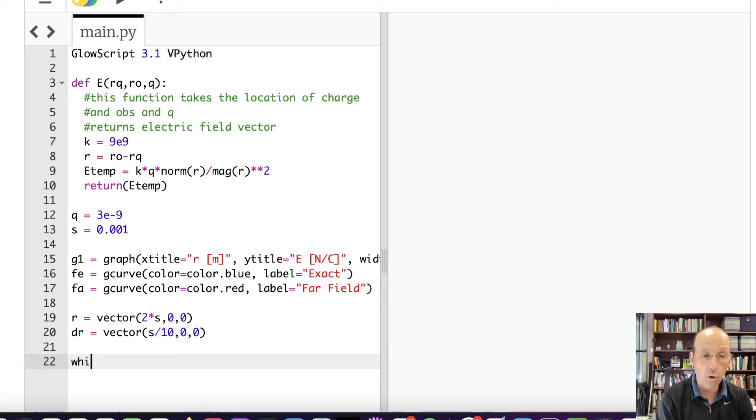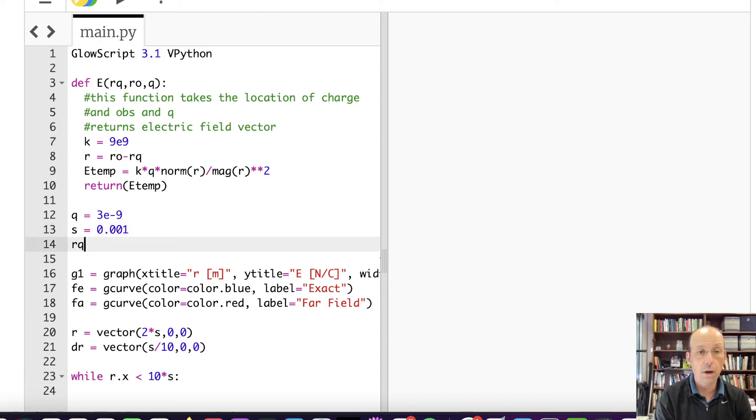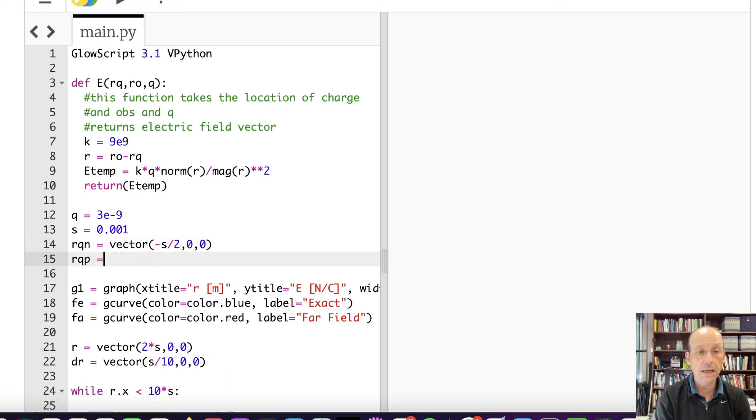Now I will say I'm going to make a loop. I'm going to say while R.x, really should be the magnitude, is less than how far away do I want to go? Let's go to 10 times the value of S. So while it's less than 10 times S, do the following. Number one, I want to calculate the exact value of the electric field. So here I have two charges separated by S. Let's make RQN, the negative charge position, equal to vector negative S over 2, 0, 0. I'm going to center it on the origin. RQP is going to be vector S over 2, 0, 0. And then my observation location is going to be R. Actually, I guess I should call that RO. Let's call that RO.